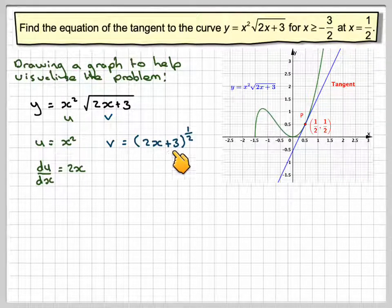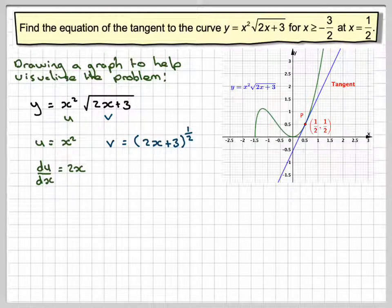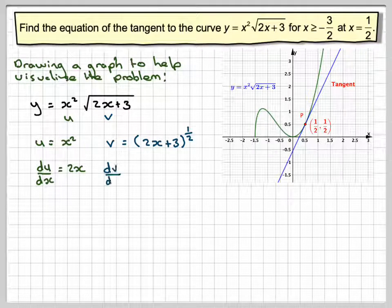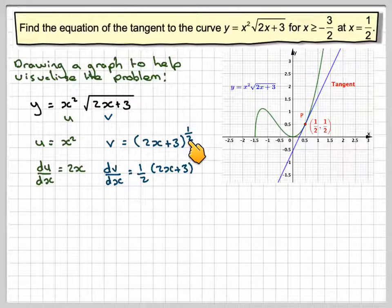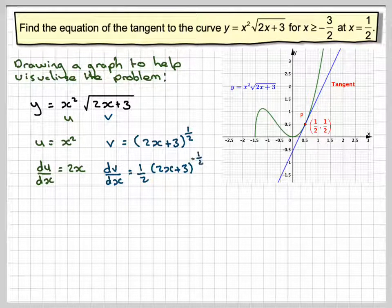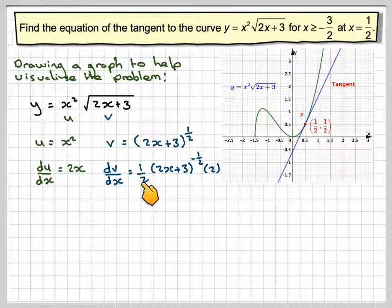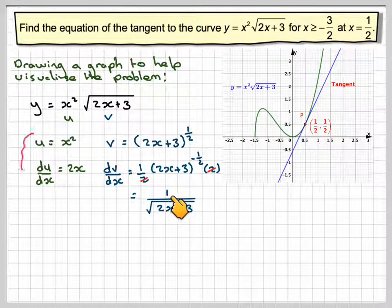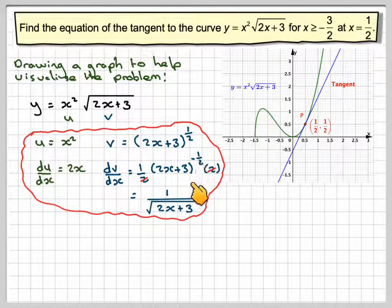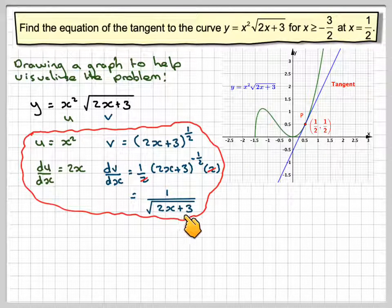v is 2x plus 3 to the power of a half. If we differentiate that using the chain rule, we're going to get a half, write down the bracket 2x plus 3, reduce the power by 1 so we get a half minus 1 which is minus a half, differentiate the bracket we get 2. Write your fractions one above the other, then you can easily see that that 2 and that 2 cancel. Therefore that now becomes 1 over, because of the minus in the indices, the square root of 2x plus 3, because a half means to take the square root.